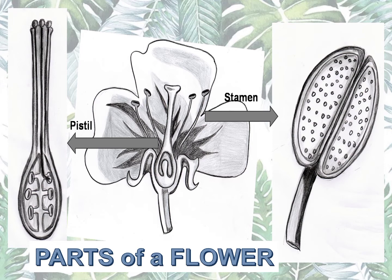Itong dalawa ay naglalaman ng reproductive parts ng plants — si pistil at si stamen. Pistil ang female reproductive part, si stamen ang male reproductive part. May mga flower na pareho silang nandun, pero may mga flower din na hindi — may flower na ang laman lang ay pistil, tapos sa ibang flower si stamen lang. Sa module 4, na-describe na natin silang dalawa.